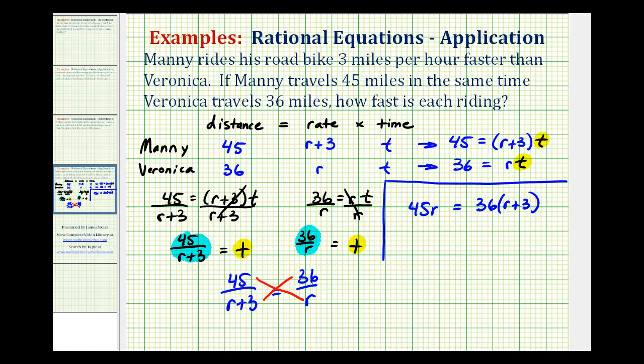And now we'll clear the parentheses and solve for r. So we'll distribute here. So we'll have 45r equals 36r plus 108, subtract 36r on both sides.